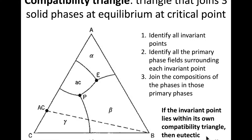The first thing we're going to do with a ternary phase diagram in front of us is identify all the invariant points. Those invariant points are where boundary curves meet up to a single point — so E and P in this case — and those are our two invariant points.